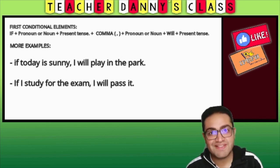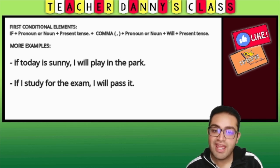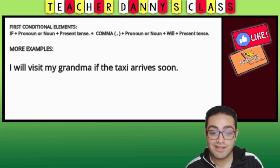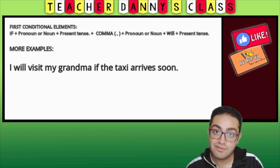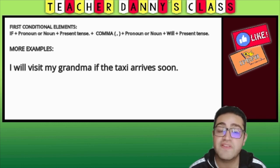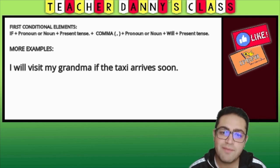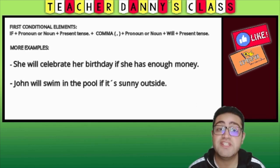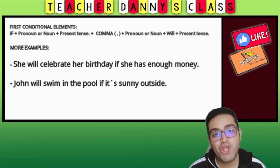But what will happen if I say the future action first? Here's an example: 'I will visit my grandma if the taxi arrives soon.' In that case, the future action comes first and we continue with the possibility — without a comma. More examples: 'She will celebrate her birthday if she has enough money.' 'John will swim in the pool if it's sunny outside.'